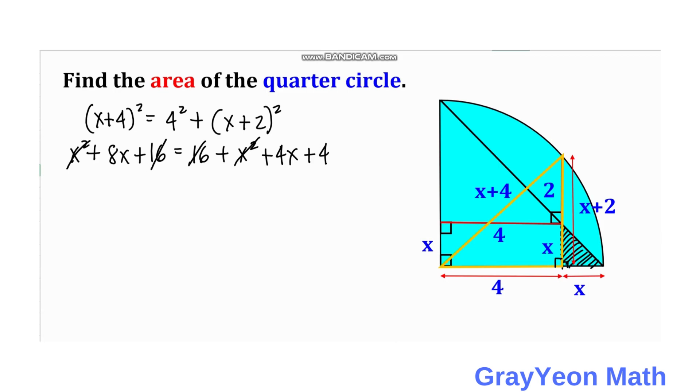We are left with 8x. Then we need to subtract 4x, so we have 4x is equal to 4. And x is simply 1 if we divide both sides by 4.